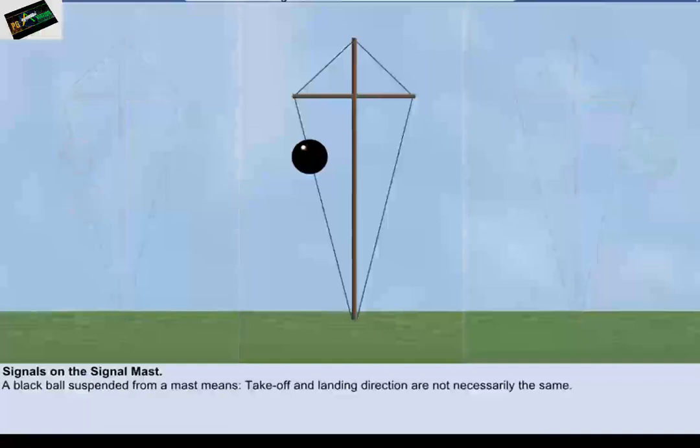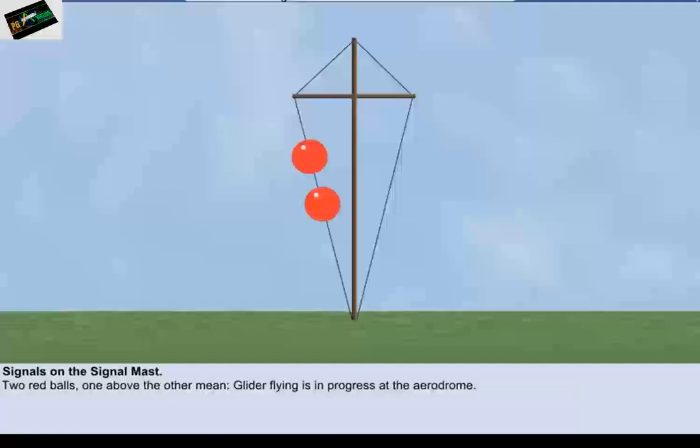A black ball suspended from a mast signifies that the directions of take-off and landing are not necessarily the same. Two red balls disposed one above the other and suspended from a mast signify that glider flying is in progress at the aerodrome. A rectangular green flag flown from a mast indicates that a right-hand circuit is in force.